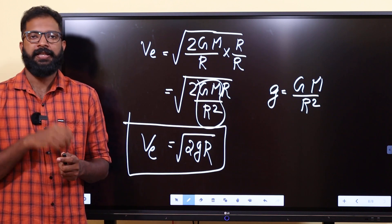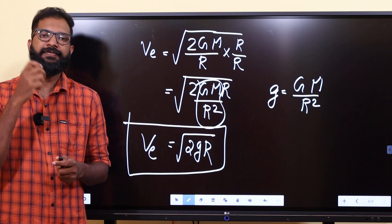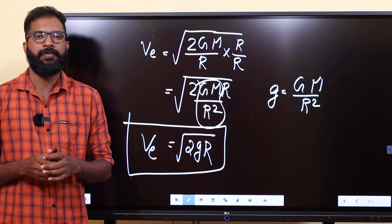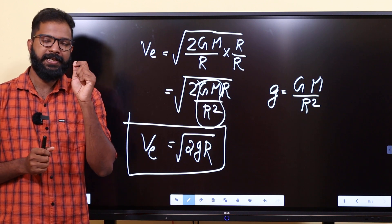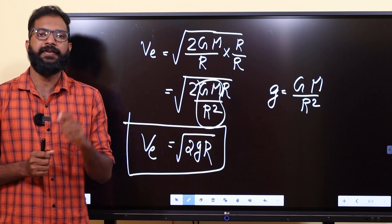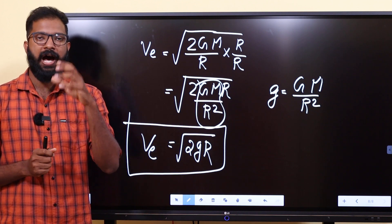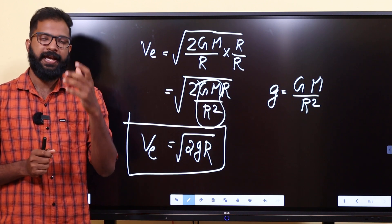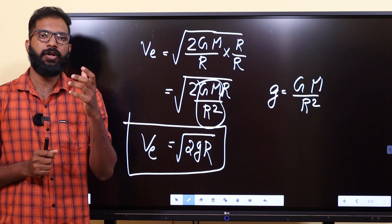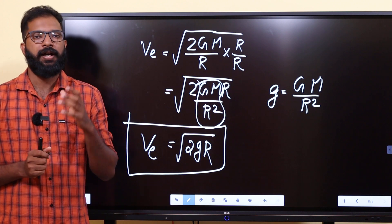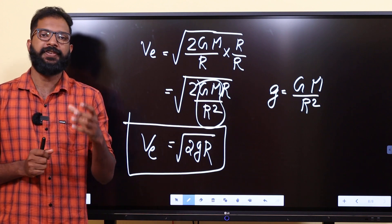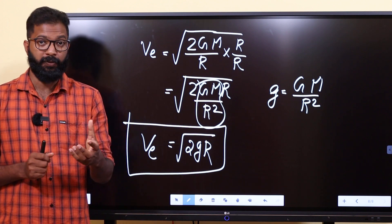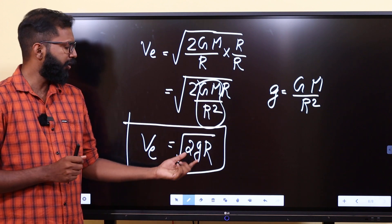Escape velocity does not depend on the mass of the object — it depends on the small mass or large mass equally. The escape velocity is the same regardless of the object's mass at the surface of the Earth.